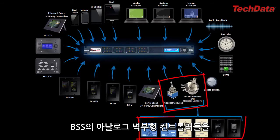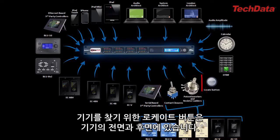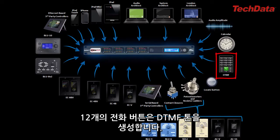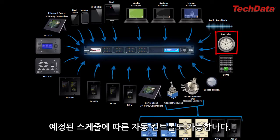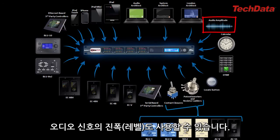Other control options include simple analog electrical components or prefabricated analog wall controllers from BSS consisting of those components, a simple push button found on the front and rear of the device, the 12 buttons found on any phone capable of making DTMF tones, automatic control based on a schedule, and even the amplitude of audio signals as a control language for SoundWeb London.